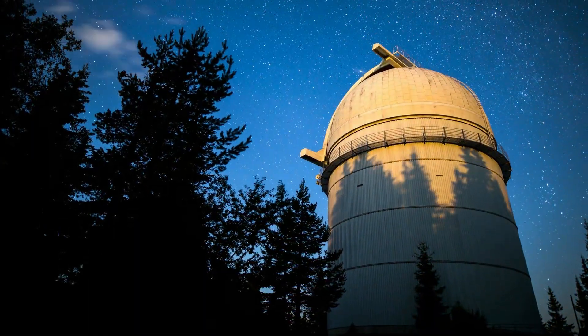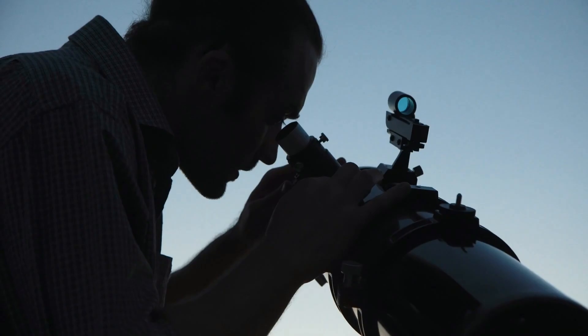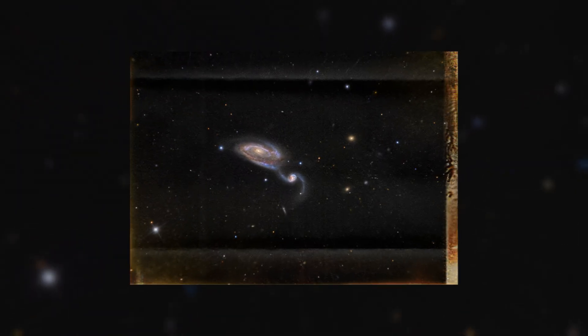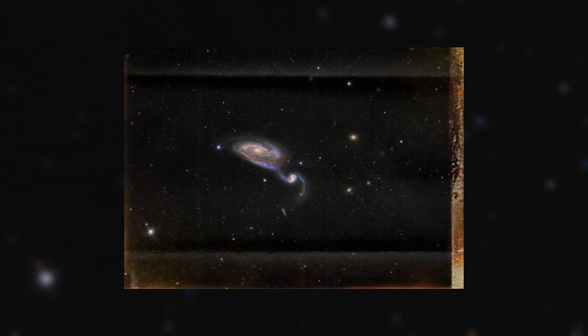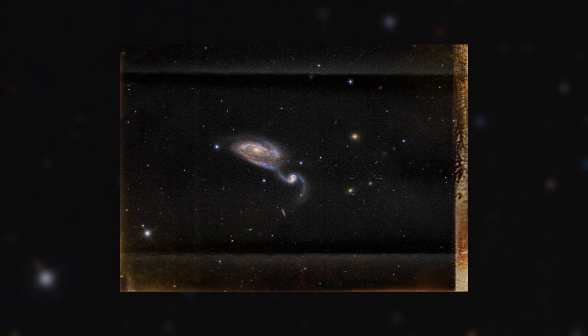Scientists from the Gemini Observatory in Hawaii have captured a unique photograph of a distant galaxy formed through the merger of two spiral galaxies a billion years ago.